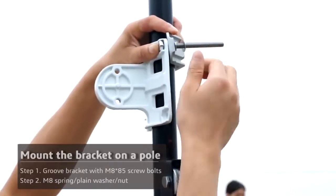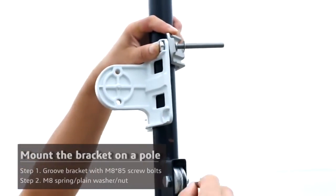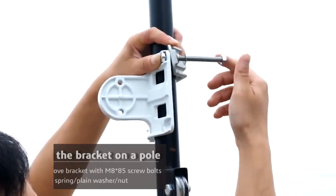Then slide on the M8 spring washer, followed by the plane washer, then fasten with a screw nut.